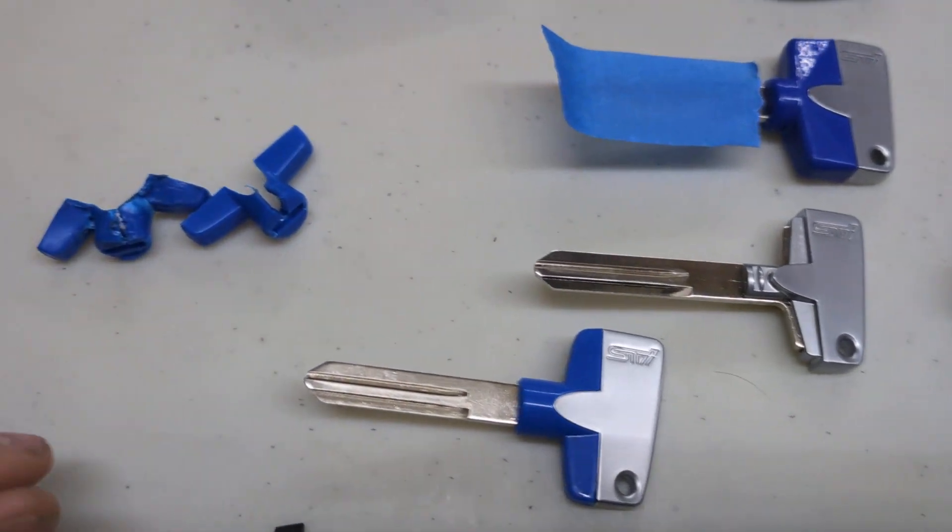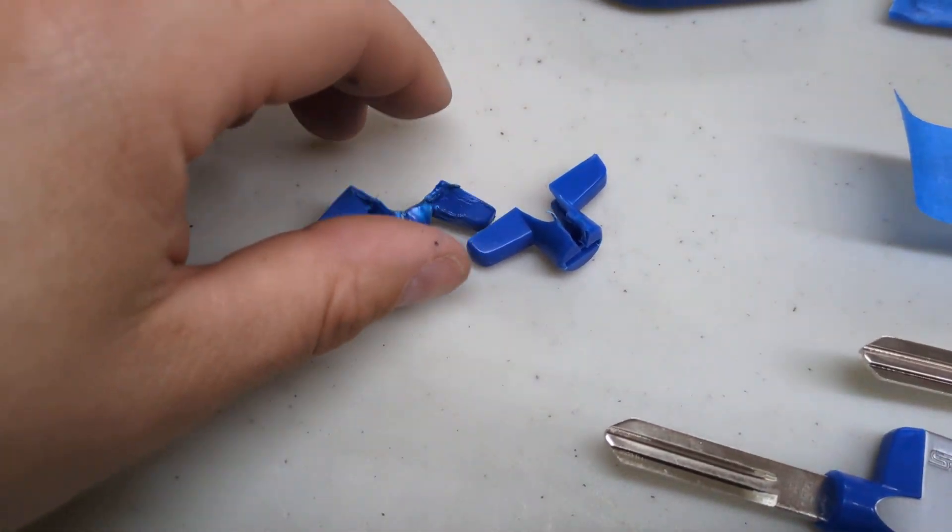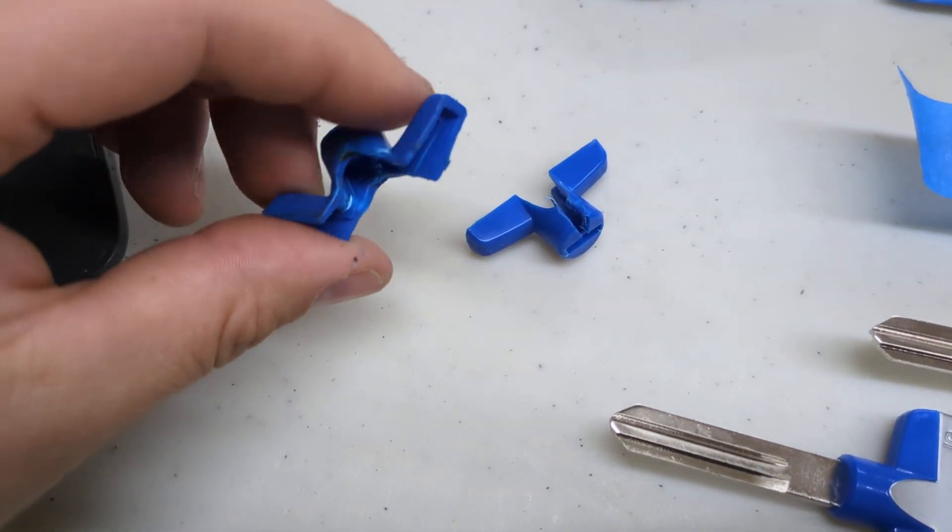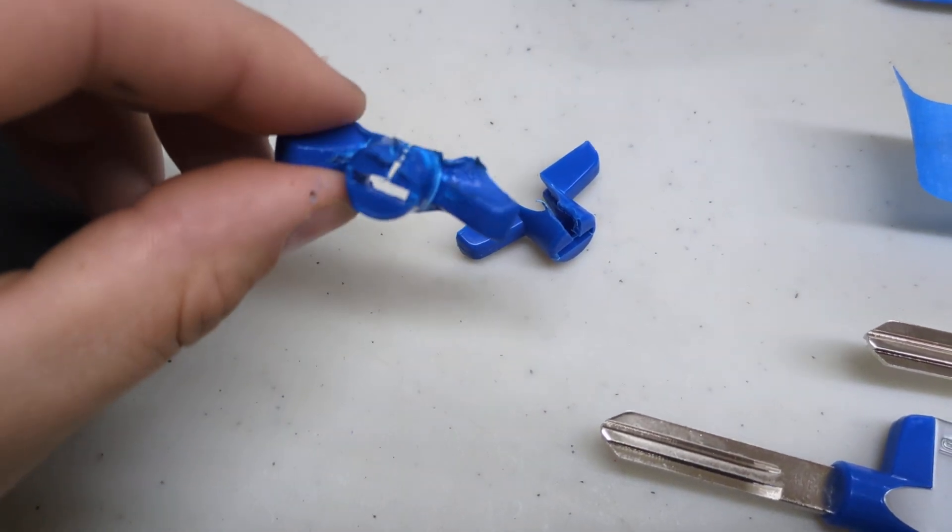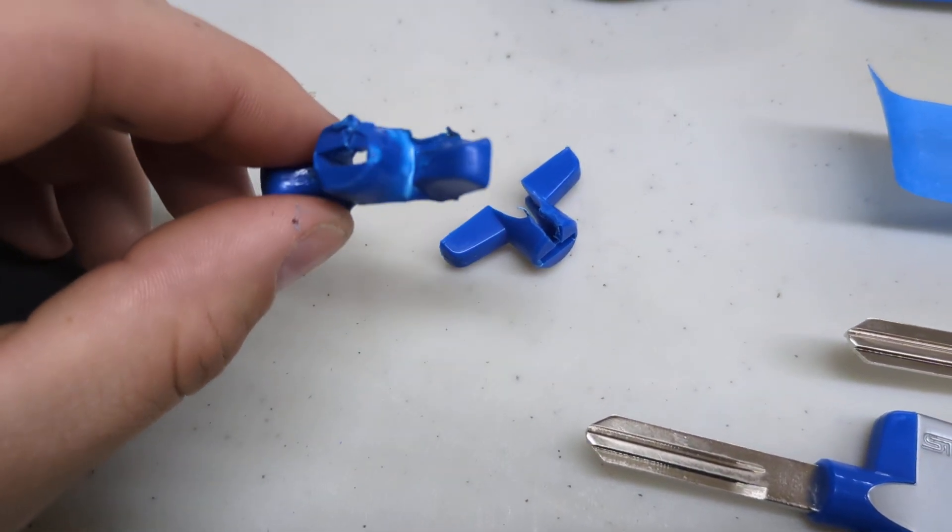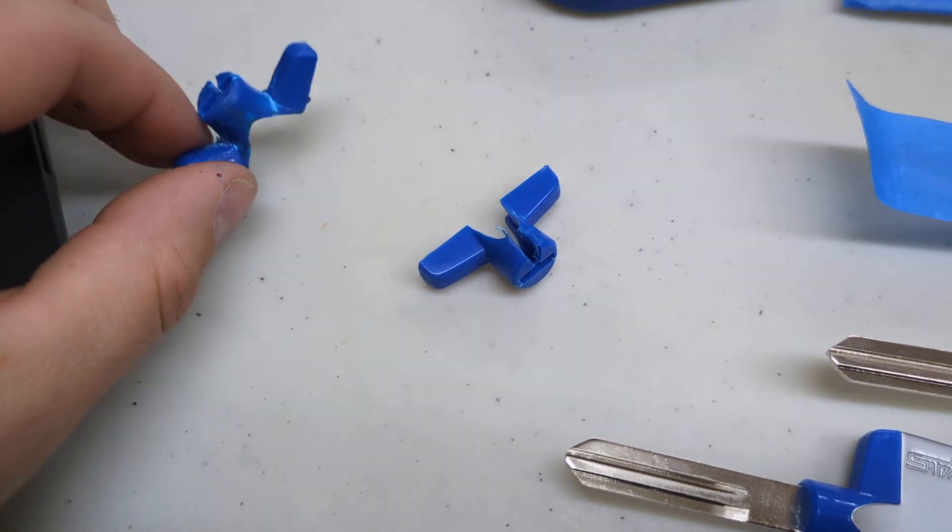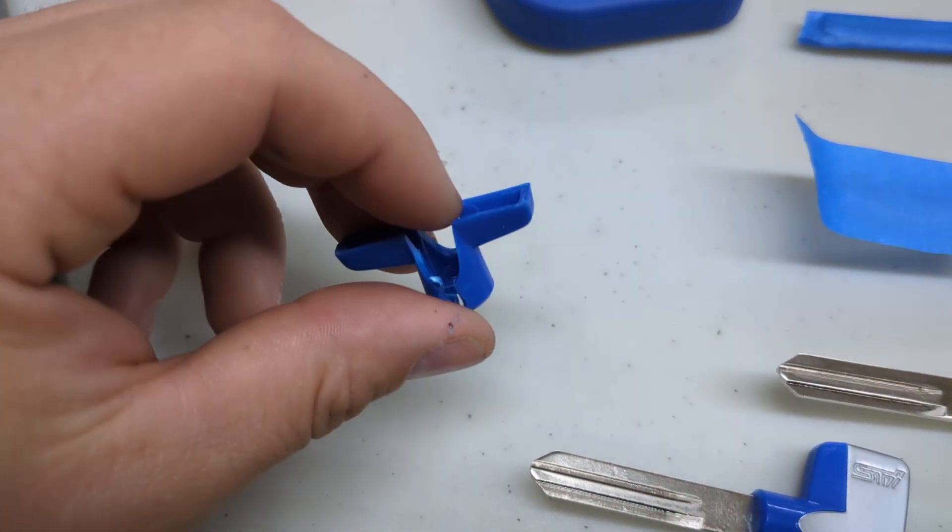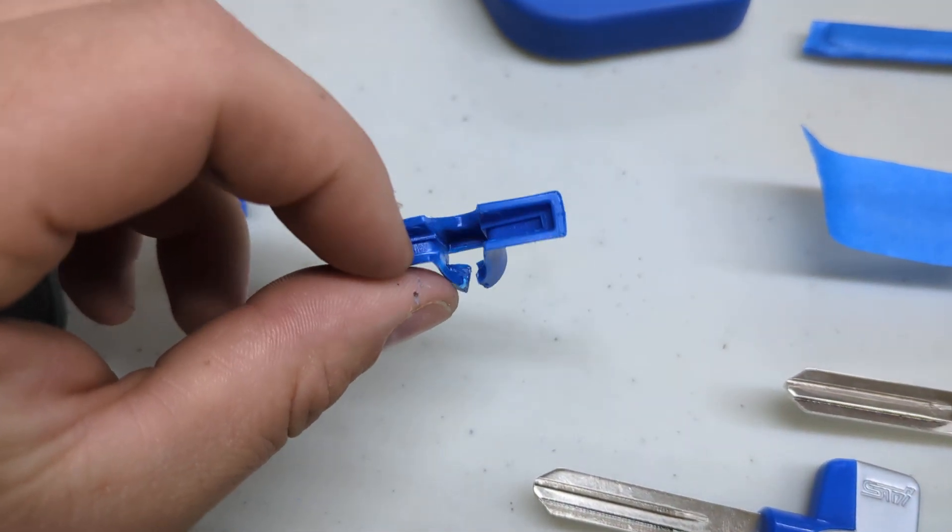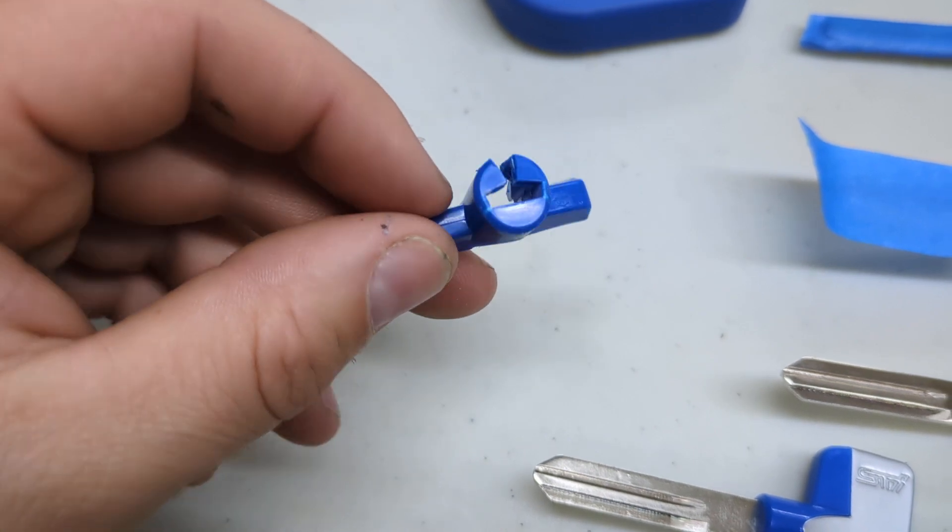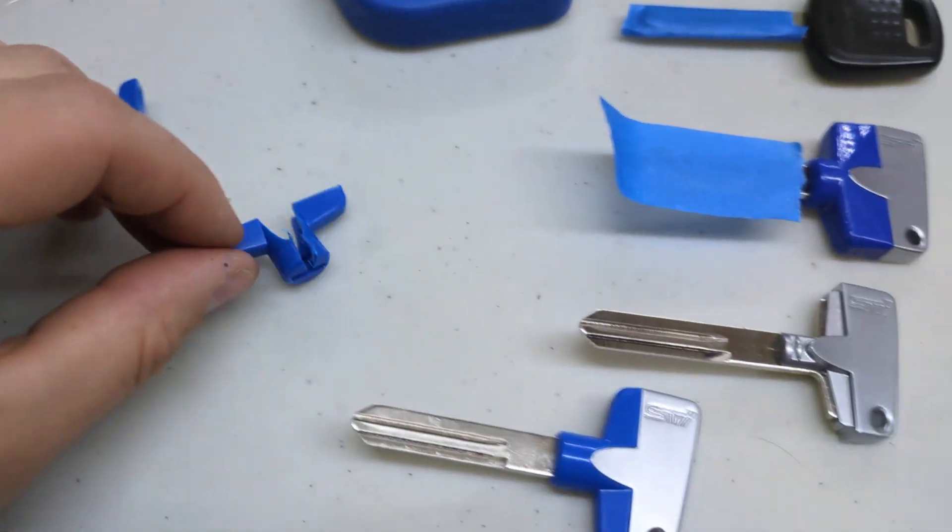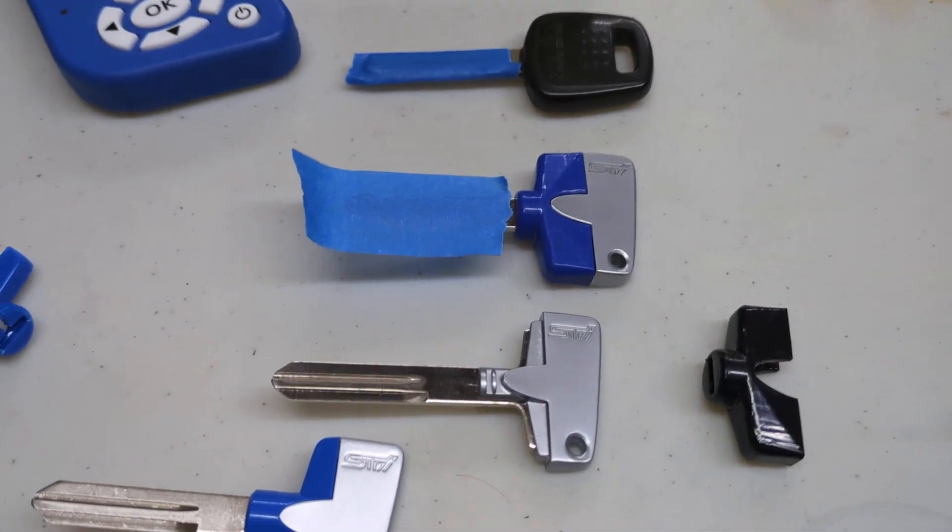These blue plastic pieces that come on the OEM key can't be removed without destroying them. This was the first one that I removed. I tried to be careful and it was just a lost cause. This is the second one. Even knowing exactly where the snap parts are, I still ruined it quite a bit. So you can't take the blue plastic off without destroying the key.